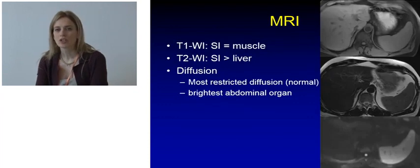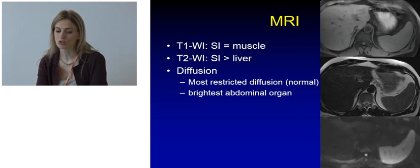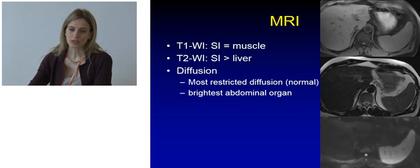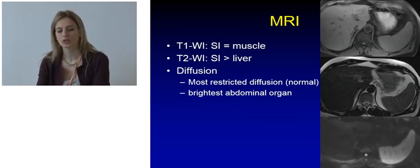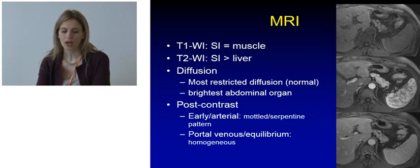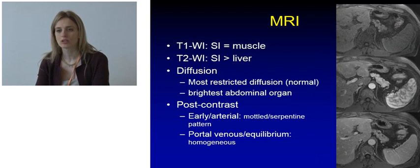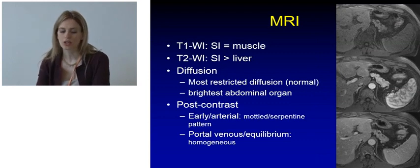On MRI, the signal intensity on T1-weighted images is iso-intense to the muscle and on T2-weighted images it's hyper-intense to the liver. On diffusion-weighted imaging, the spleen is characteristically the brightest abdominal organ because it has the most restricted diffusion. After contrast administration, we see the same enhancement pattern as for CT, with the mottled enhancement pattern on the arterial phase and the homogeneous enhancement in the venous and equilibrium phases.